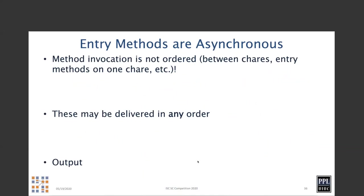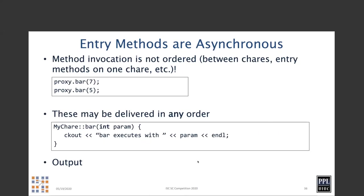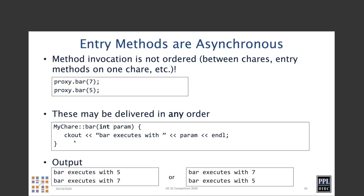Entry methods are asynchronous, meaning if you make a call you won't get a return value and you're not blocking at the call site. This also means we don't assume any order of delivery. For example, making two method invocations with parameters seven and five to the 'bar' method of a proxy: the bar method can execute printing 'bar executes with five' then 'bar executes with seven', or it can do seven first and then five, because you have no control over the order in which method invocations get delivered. This gives Charm++ its greatest strength and most trouble to the programmer, because you have to deal with all possible arrival orders. There are constructs that tame this asynchrony called structured Dagger.